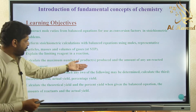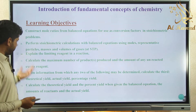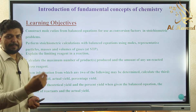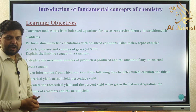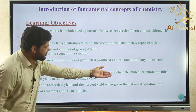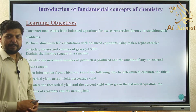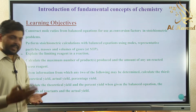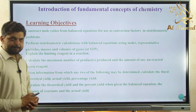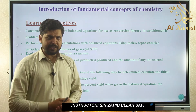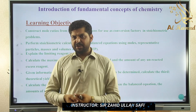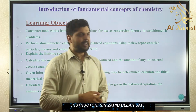Fourth objective: calculate the maximum number of products produced and the amount of any unreacted excess reagent. Given a reaction, you will be asked how much of a reactant remains after reaction and how much is utilized. Fifth: determine theoretical yield, actual yield, and percentage yield. Calculate theoretical and percentage yield given the balanced equation, amount of reactants, and actual yield — this is the last learning objective of Chapter 1.